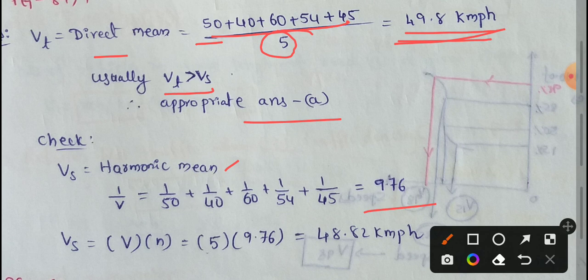To simplify, the total value is 9.76. So Vs, space mean speed, equals n divided by this value of 9.76.